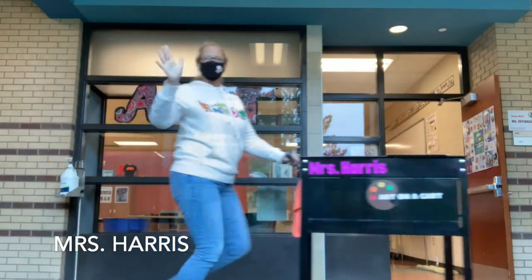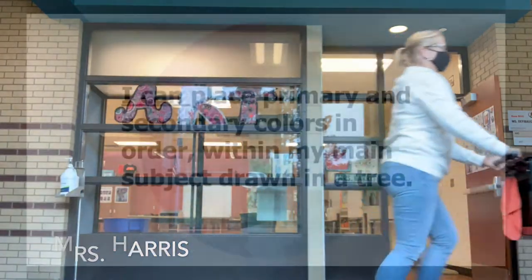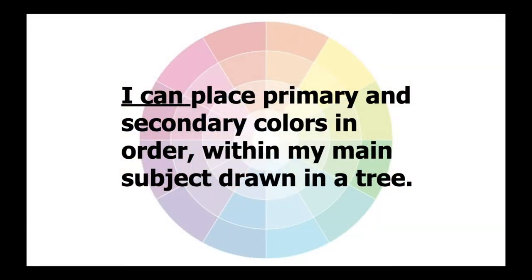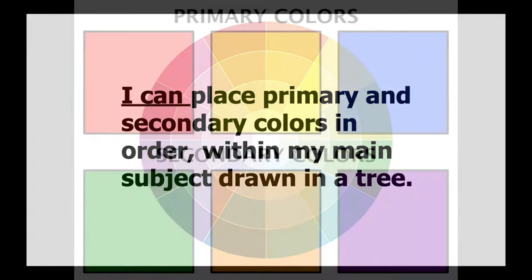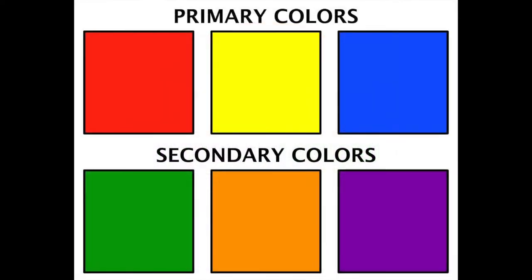Hi friends, Mrs. Harris here. Today our I can statement is: I can place primary and secondary colors in order within my main subject drawn in the tree. We know the primary colors are red, yellow, and blue, and the secondary colors are green, orange, and purple — or in the art world, violet.